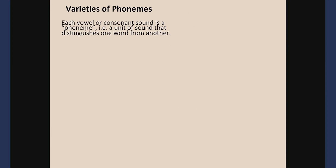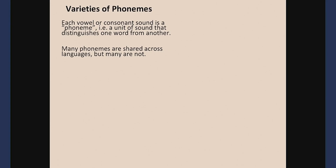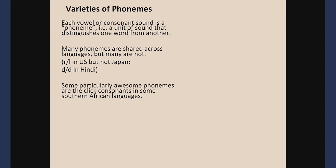What counts as a phoneme in one language may not be in another — for example, R and L are not distinguished in Japanese, and two different D sounds that sound the same to English speakers are distinguished in Hindi. Those are variations across natural languages on which sounds are used to discriminate different words. Some fascinating phonemes use click consonants, common in some southern African languages.